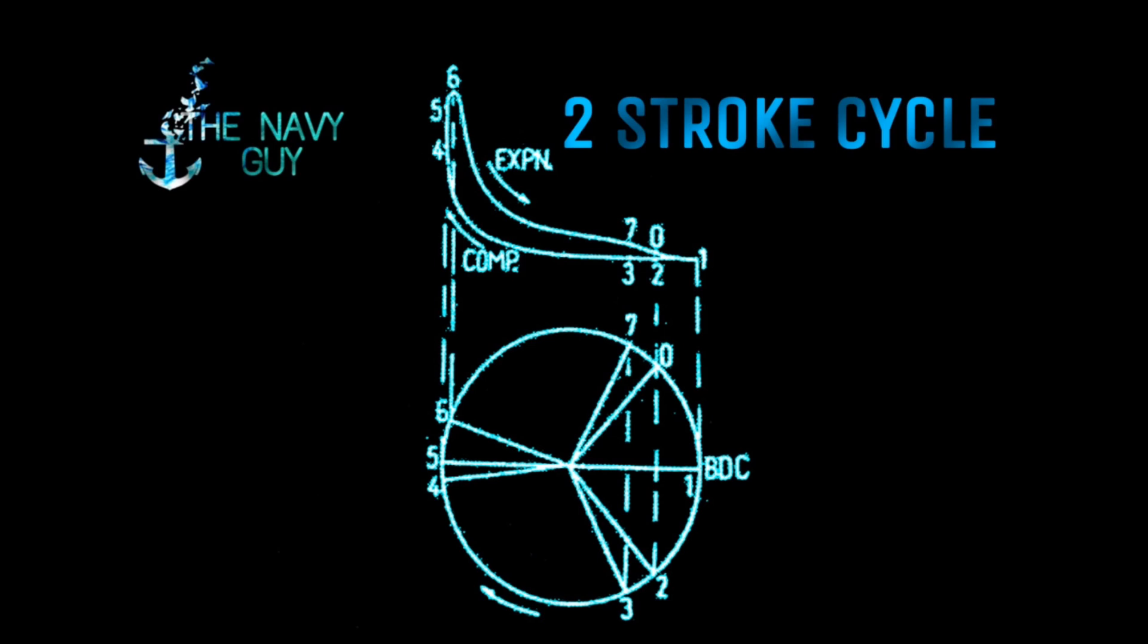Now let's talk of the processes involved. At 0, scavenge ports are open. From 0 to 1, air is sucked in which pushes out the residual exhaust gases in the cylinder. At 1, piston is at BDC, i.e. bottom dead center. From 1 to 2, completion of scavenge process takes place and fresh air is filled inside the cylinder for combustion. At 2, scavenge ports are closed. From 2 to 3, post scavenging takes place. At 3, exhaust valve closes.